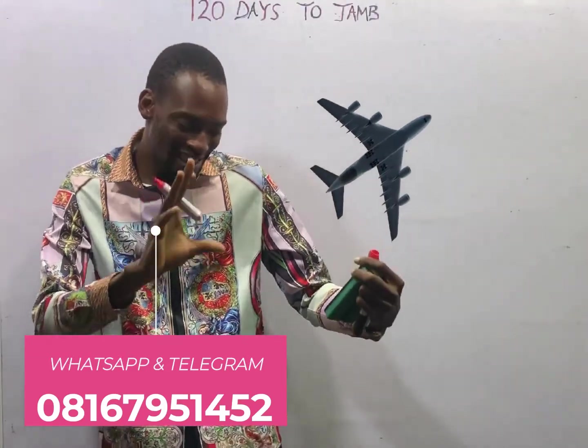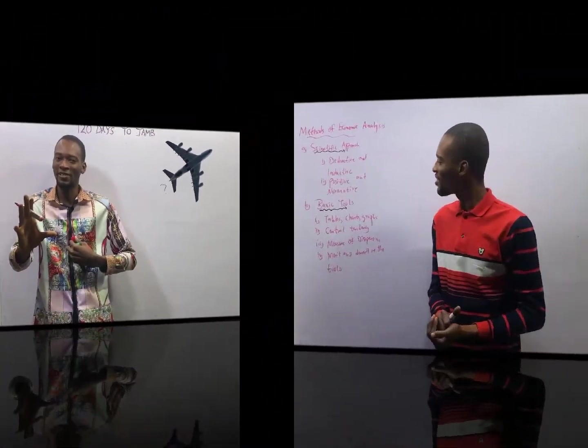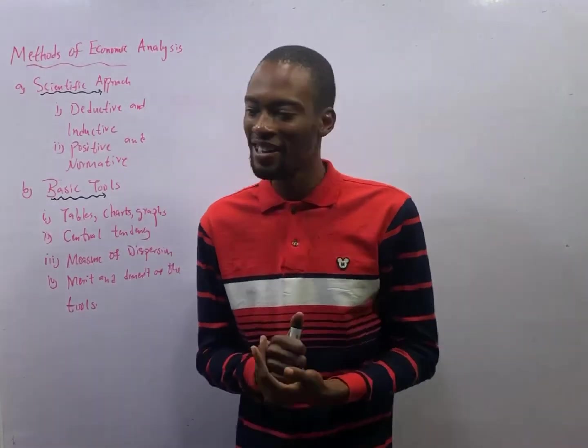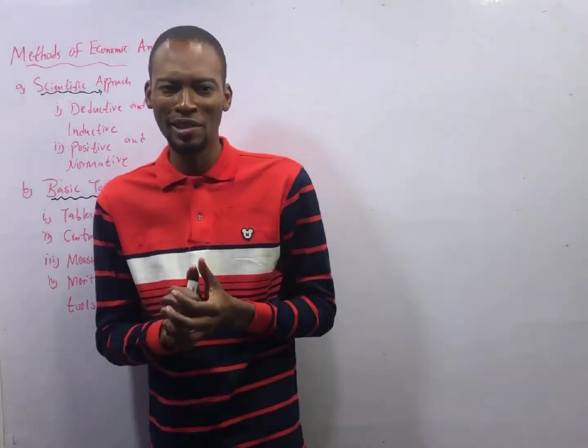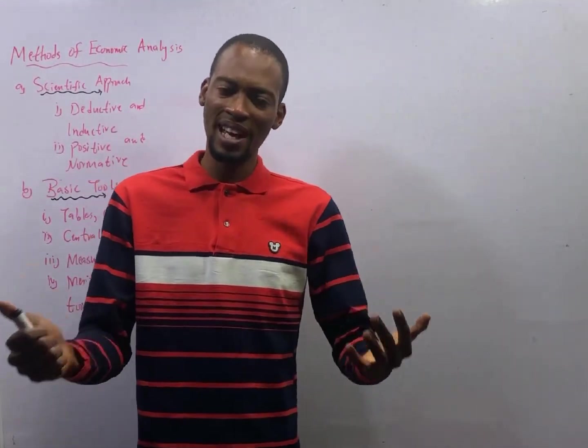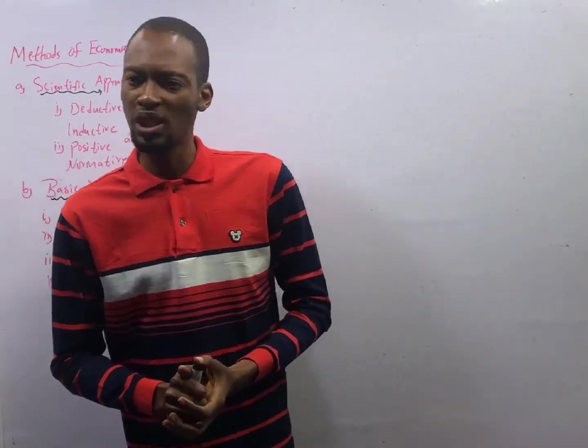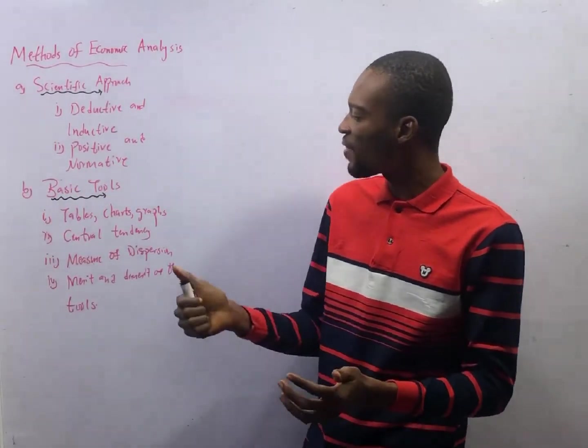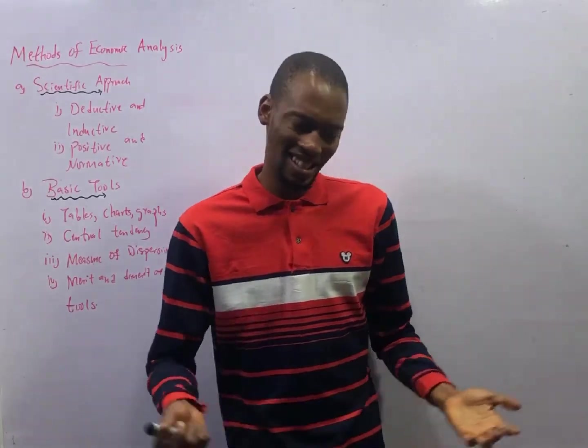Ladies and gentlemen, it is time to take off. This is episode number 9 of the 120 Days to Jamb Economics with Flash Isaac. In this episode, we shall be looking at questions under tables, charts, and graphs.